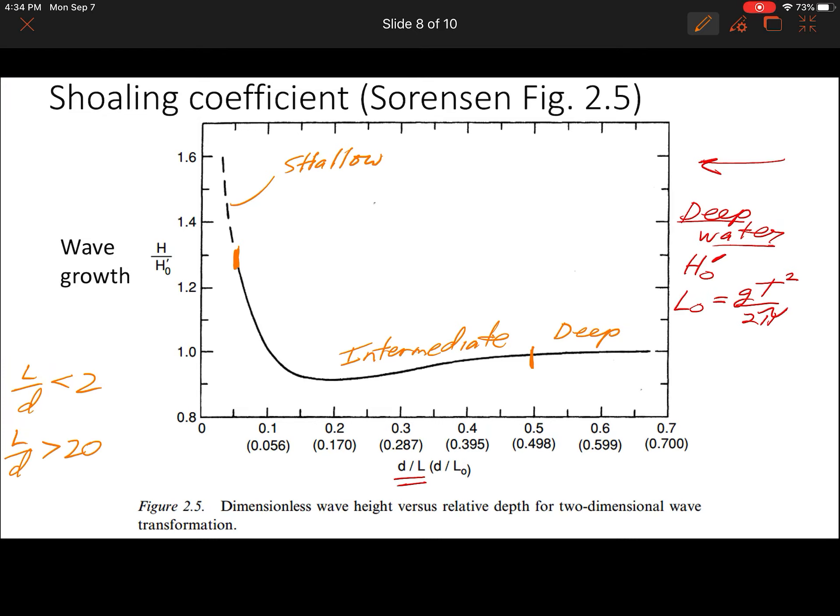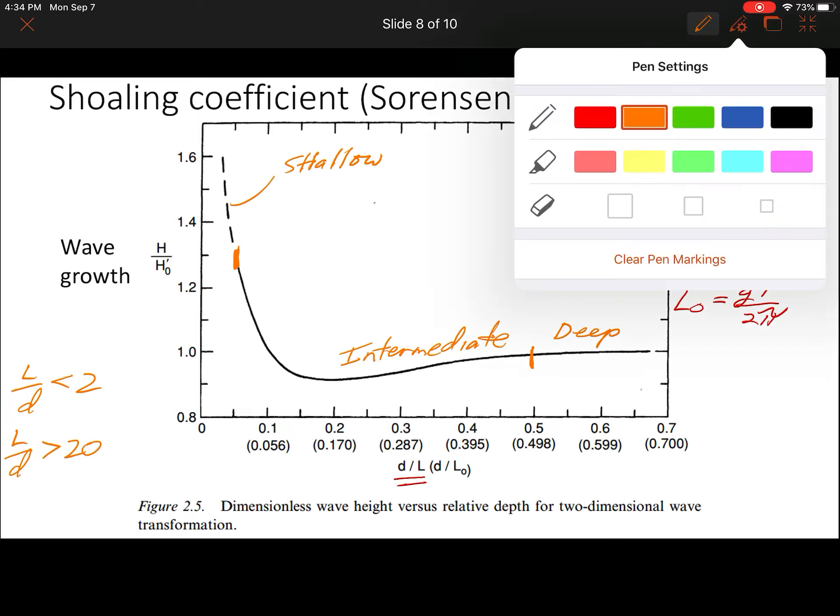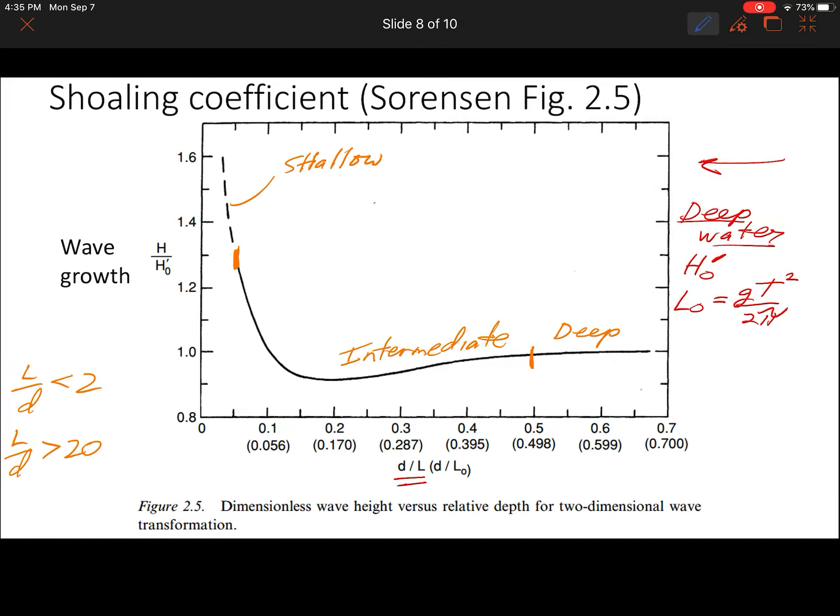The way to think about this graph is as the wave is approaching the coastline from deep water, it is following along this graph. At some point it gets to a d over L value that's below 0.7.